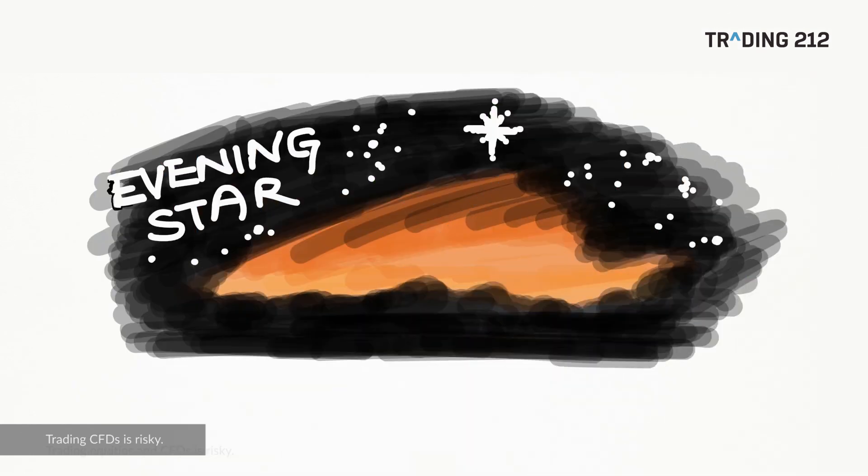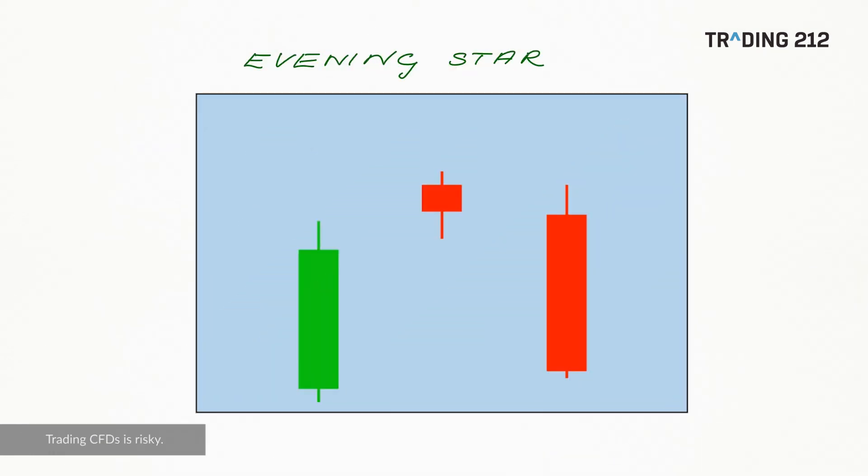Our fourth pattern is the evening star. So the evening star is a pattern that we could say is basically the evil twin of the morning star. So it's a bearish reversal pattern. As the evening star appears in the sky in the west just before evening falls, so this pattern augurs falling prices.